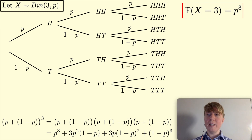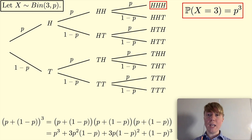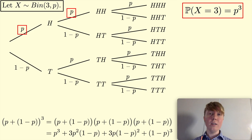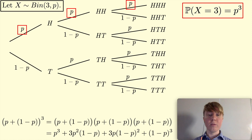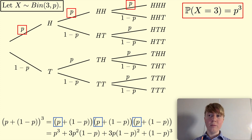Let's look at P(X=3) = p³. This means three successes — three heads in a row. There's a probability p of heads the first time, multiply by another p, then another p, giving p cubed. In the binomial expansion at the bottom, the p³ term comes from multiplying this p by this p by this p — there's only one way to do that, so you get 1 times p³.